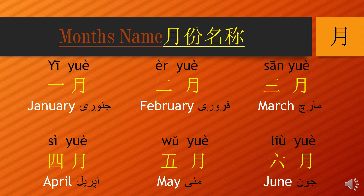Months name. Months ko Chinese language mein yue kaha jata hai. Number ke saath saath yue ka istemaal har mahine ko zahir karta hai — jaise pehla mahina, doosra mahina, teesra mahina, chautha mahina. Isi tarah saal mein 12 mahine hote hain, to har mahine ke saath Chinese counting lagane se Chinese months ban jaate hain, yani ki aapko Chinese months banane ke liye 1 to 12 counting Chinese mein aani chahiye.